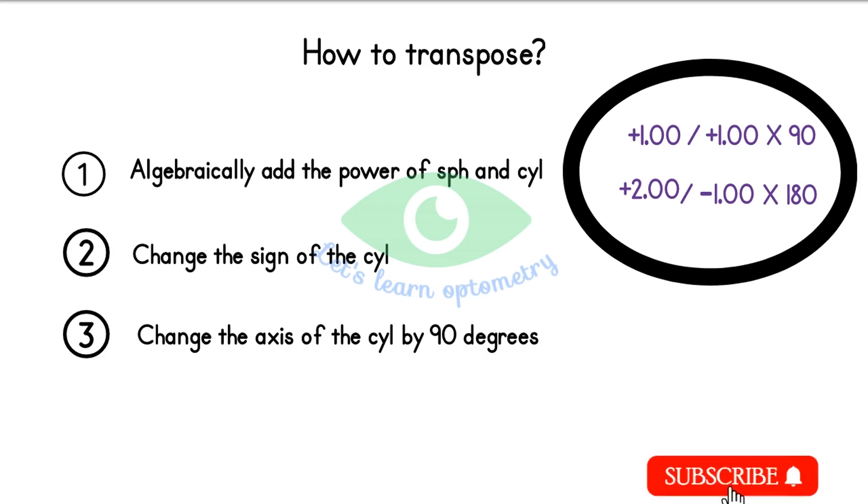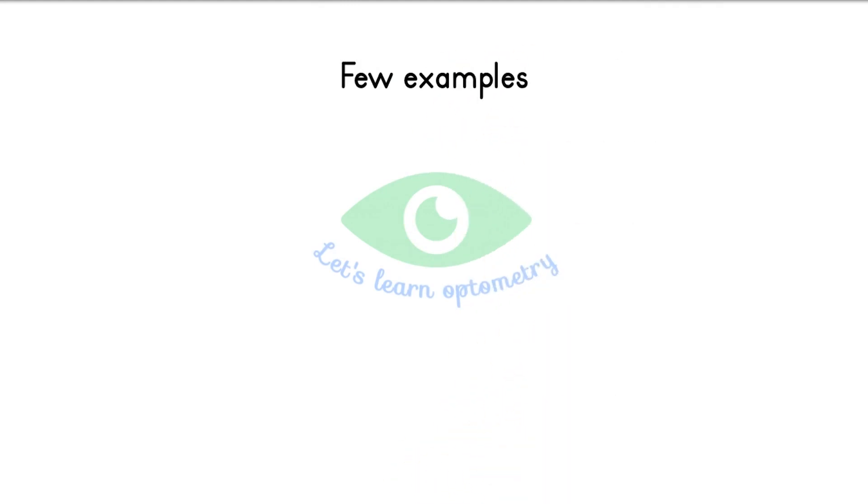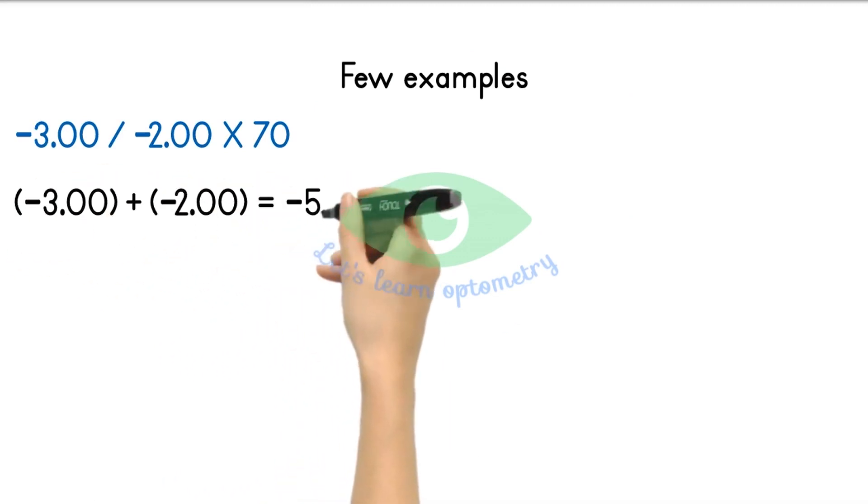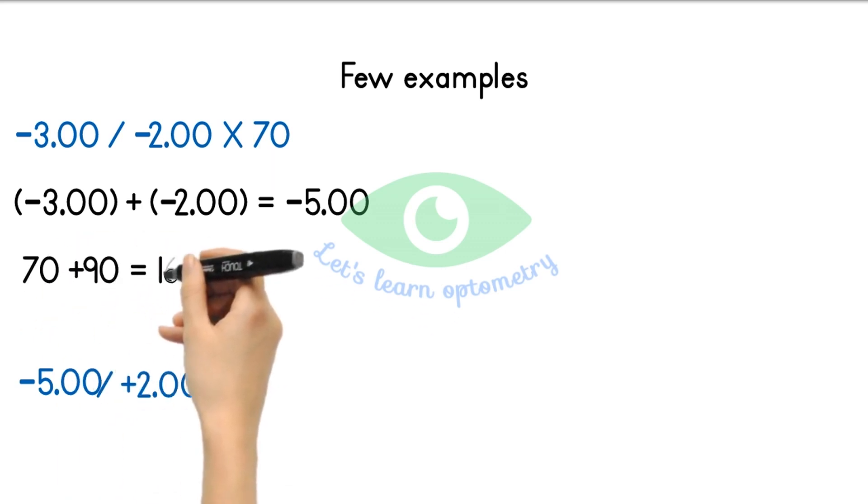So let's see few more examples. Minus 3 spherical minus 2 cylinder at 70 degree. So if I add minus 3 spherical and minus 2 cylinder I get minus 5 spherical. And then I need to change the minus 2 cylinder to plus 2 cylinder. Now the axis. The given axis is less than 90 degree. So if I add 90 to it I get 160.